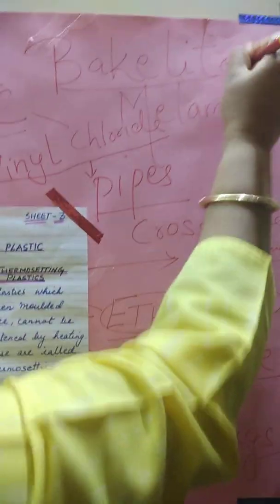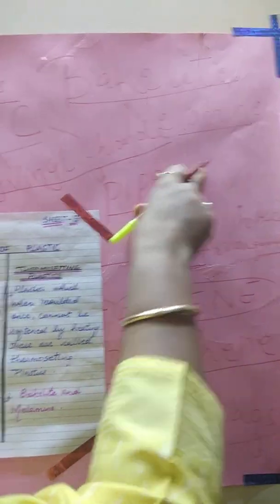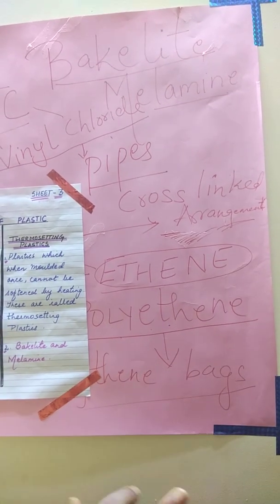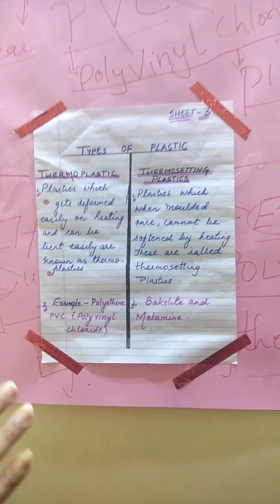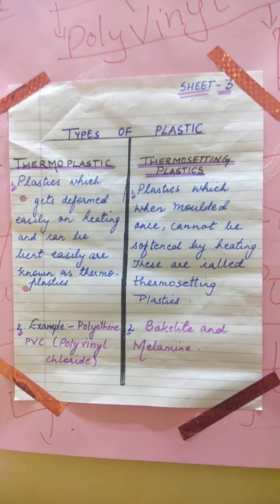Children, these two common examples — Bakelite and melamine — have certain properties that are very, very important. I will explain in an elaborate way why they are important, what the main characteristics of Bakelite and melamine are, and why they fall under the category of thermosetting plastics. I hope the topics covered today are clear to you. If you have any doubt, please contact me through Campus Care. Thank you, children. Have a nice day.